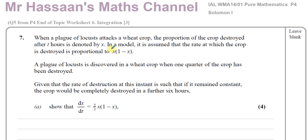The problem says: when a plague of locusts attacks a wheat crop, the proportion of the crop destroyed after t hours is denoted by x. So x stands for the proportion of crop destroyed after t hours. In the model, it is assumed that the rate at which the crop is destroyed is proportional to x times (1 minus x). So the rate at which the crop is destroyed — that's dx/dt — is proportional to x(1 minus x).